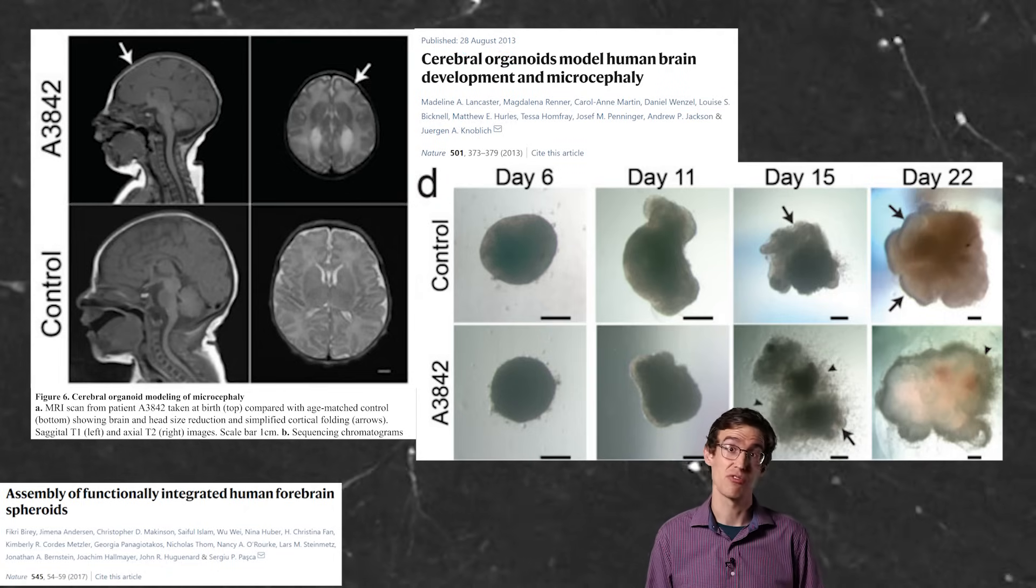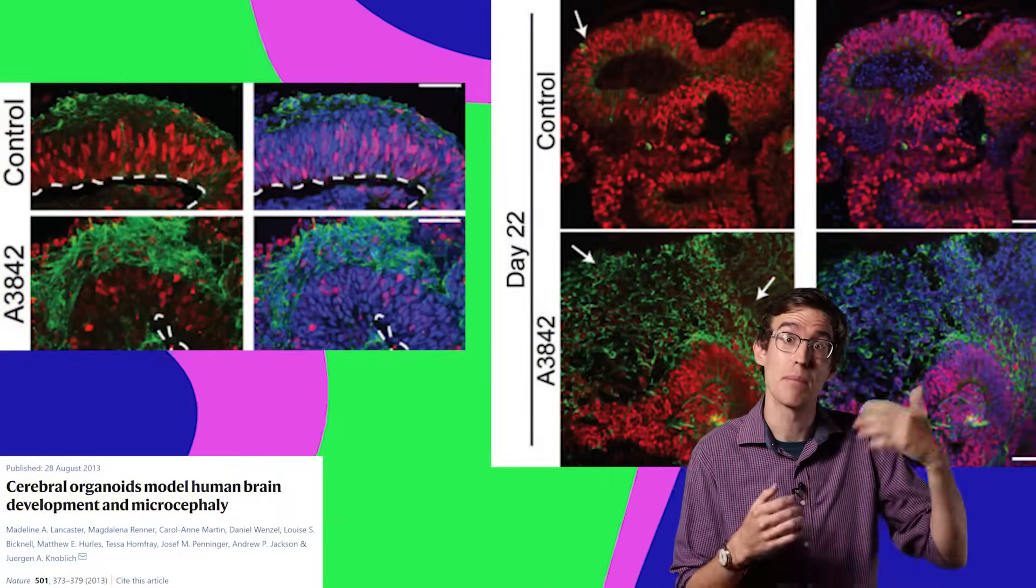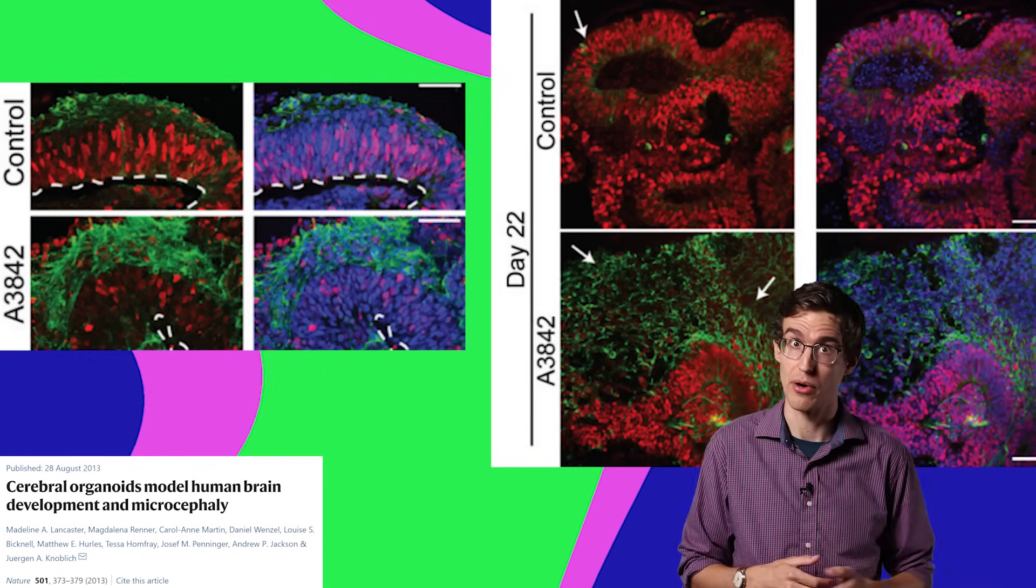They took some skin cells from a patient with microcephaly, turned them into brain cells, let them develop, and then compared them with neurotypical organoids.